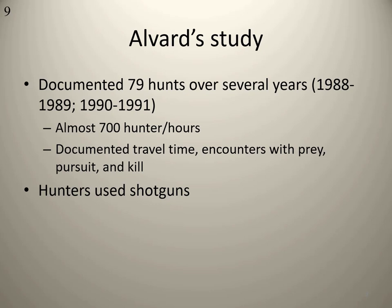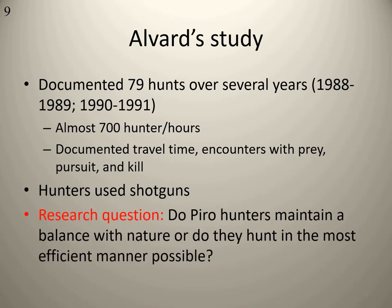The basic question he sought to answer was: do Piro hunters maintain a balance with nature? Are they intentional conservationists in the sense that they are methodical about what types of animals they kill to maintain this balance with nature? Or do they just hunt in the most efficient manner possible — the quicker and faster they can kill, the better? Or are they more intentional about trying to conserve and maintain a balance?